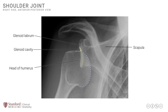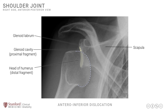This is an x-ray of a glenohumeral joint dislocation, classically described as an antero-inferior dislocation. When describing dislocations, the convention is to describe the position of the distal fragment relative to the proximal fragment. The head of the humerus, as the distal fragment, is anterior and inferior to the glenoid cavity — hence the term antero-inferior dislocation.